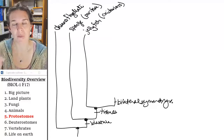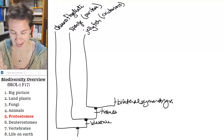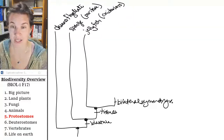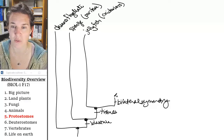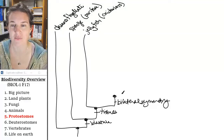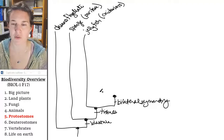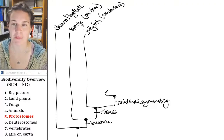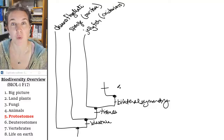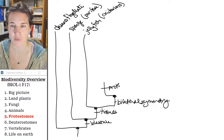So bilateral symmetry is something everybody in this group has. Now we're going to divide off a group that I have labeled protostomes — and you're probably wondering what a protostome is. Let me tell you. Everybody beyond this point has this character called protostome. 'Pro' means first.